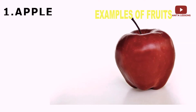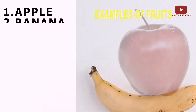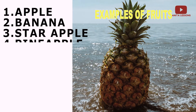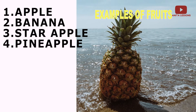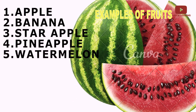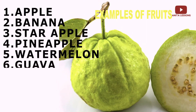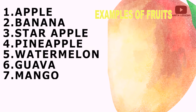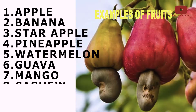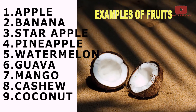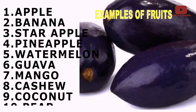Now, examples of fruits. The examples of fruits are: number one, apple; number two, banana; number three, star apple; number four, pineapple; number five, watermelon; number six, guava; number seven, mango; number eight, cashew; number nine, coconut; number ten, pear; and so on.